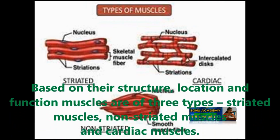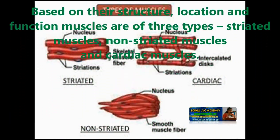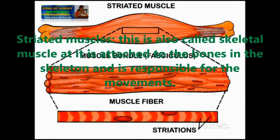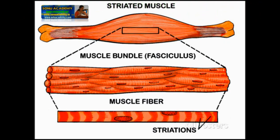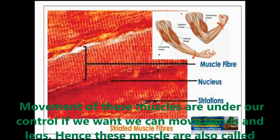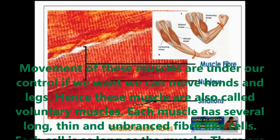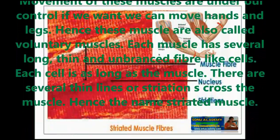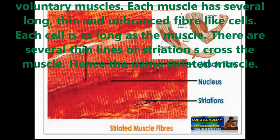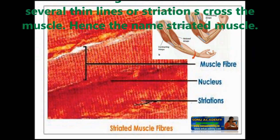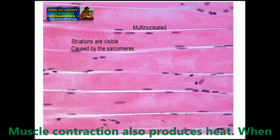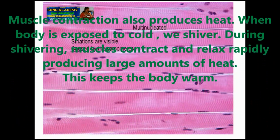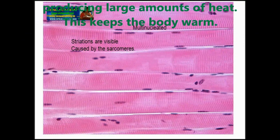Based on their structure, location and functions, muscles are of three types: striated muscles, non-striated muscles and cardiac muscles. Striated muscle is also called skeletal muscle as it is attached to the bones in the skeleton and is responsible for movement. Movements of these muscles are under our control; hence they are called voluntary muscles. Each muscle has several long, thin and unbranched fiber-like cells, each as long as the muscle. The several thin lines are striations across the muscles, hence the name striated muscle. Muscle contraction also produces heat. When the body is exposed to cold, we shiver — during shivering, muscles contract and relax rapidly, producing a large amount of heat, which keeps our body warm.